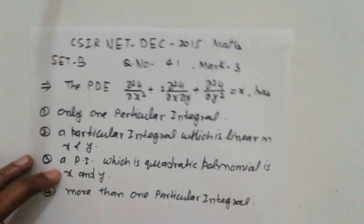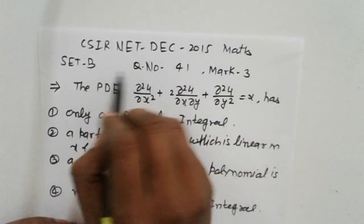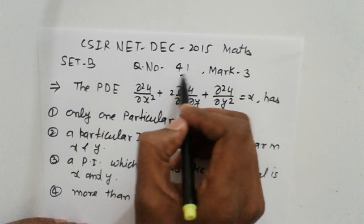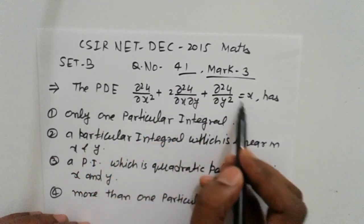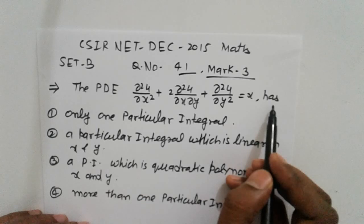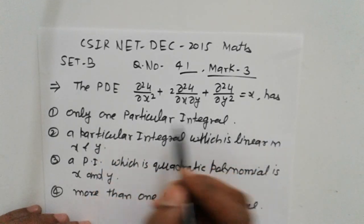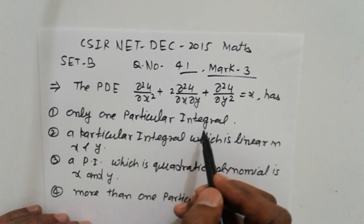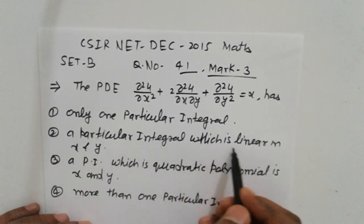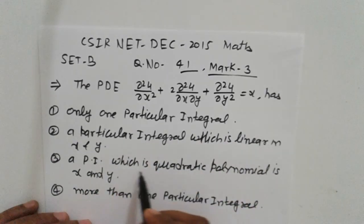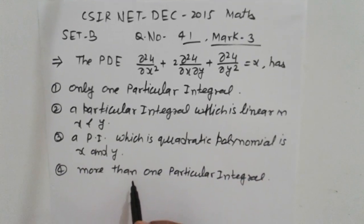The problem is from CSIR NET December 2015, Set B, equation number 41. A partial differential equation is given with four options: only one particular integral which is linear in x and y, one which is quadratic, and more than one particular integral.